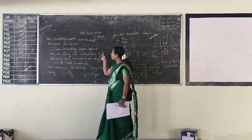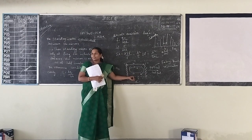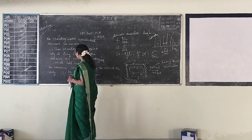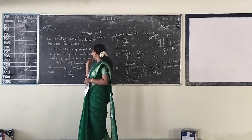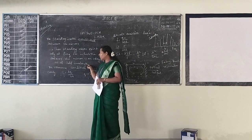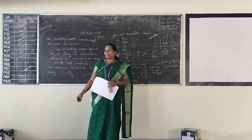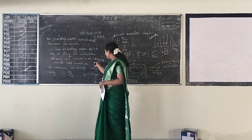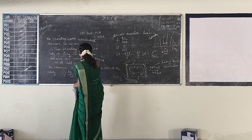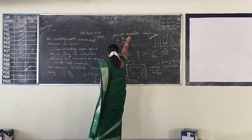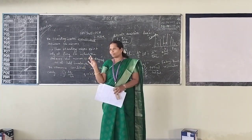The standing wave is established between the mirrors. In between these mirrors, the radiation produces a standing wave. This standing wave has a resonant frequency. This standing wave exists only at frequencies for which the distance between the mirrors is an integer multiple of half the wavelength. That is the resonant frequency condition.